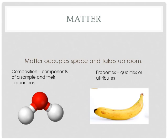Properties describe qualities or attributes. As you can see, that's a banana. Bananas are yellow, bananas are smooth, bananas are tasty. If you were to describe its composition, you might talk about its potassium or sugar levels — what makes it up. But the properties are: it's sweet, it's yellow, it's small, and so on.